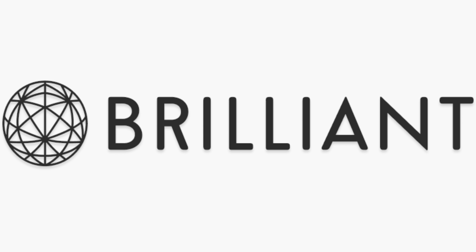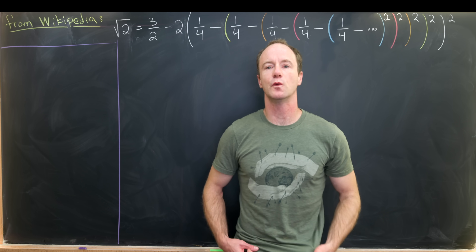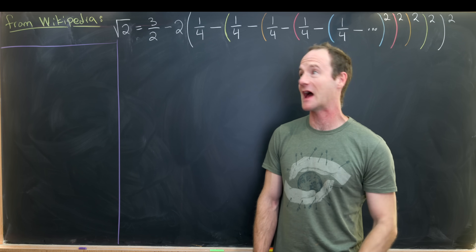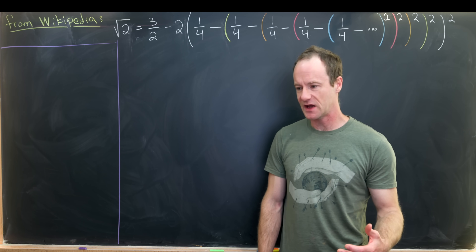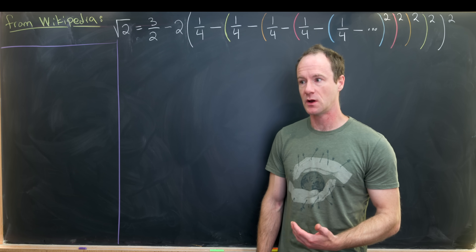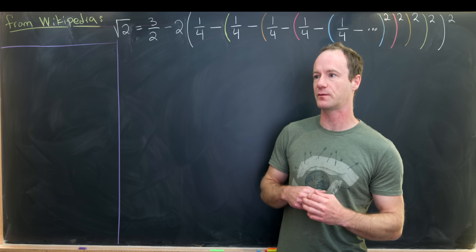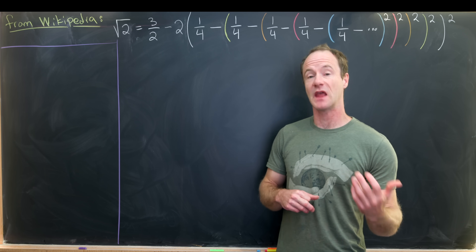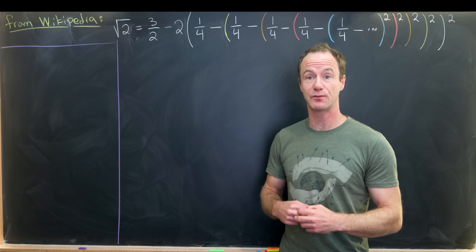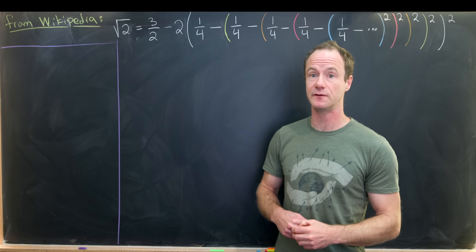Thanks to Brilliant for sponsoring today's video. So I was looking at the Wikipedia page for the square root of 2 — like as one does — and I saw this identity which I had never seen before. It didn't have a proof, but I thought I could work out a proof pretty easily, and that's exactly what I did. I'd like to present that identity as well as the proof today.